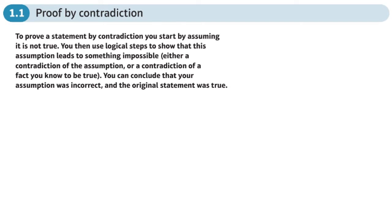This is the first section in Chapter 1 of the Pure Year 2 book, and this is Proof by Contradiction. There are lots of different ways of proving or disproving things in maths. Proof by Contradiction is one of them. You can prove or disprove things by using a counterexample or by exhaustion, where you try a finite set of values. Proof by Contradiction is just another way of doing proof — we try to prove a statement by disproving the opposite.